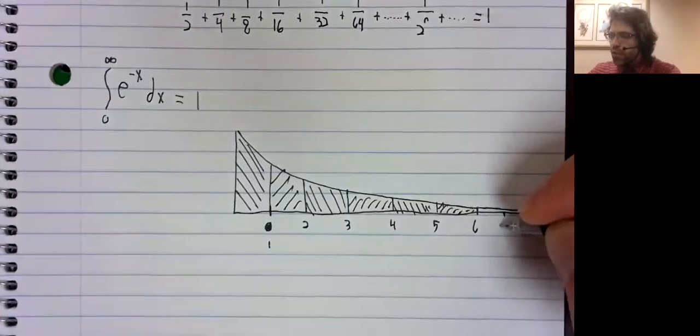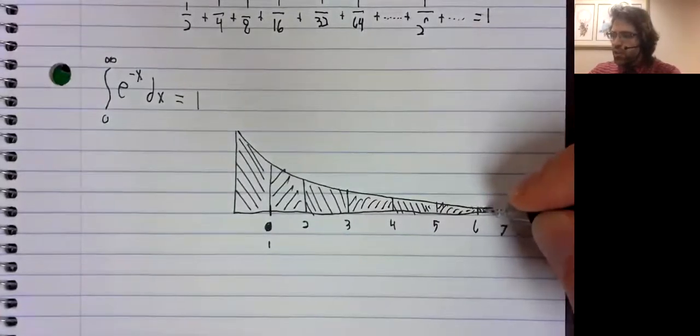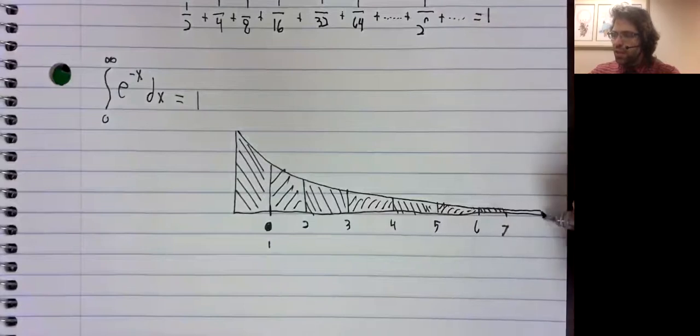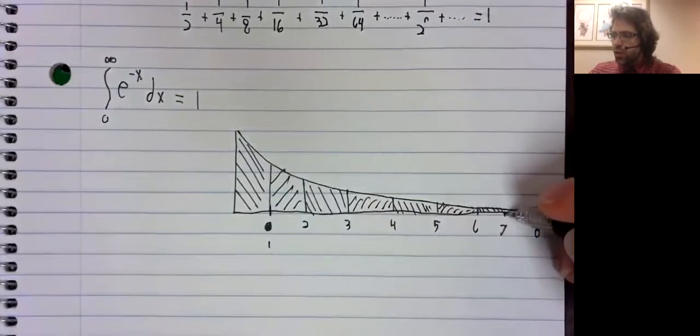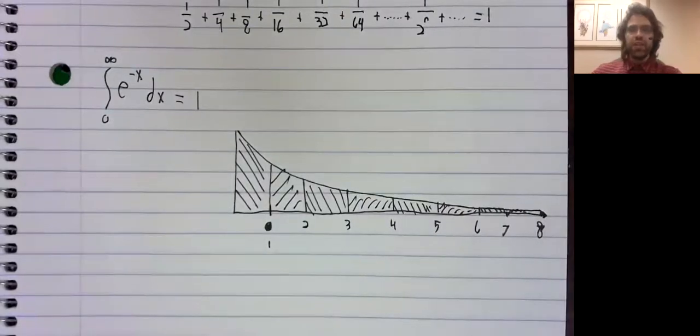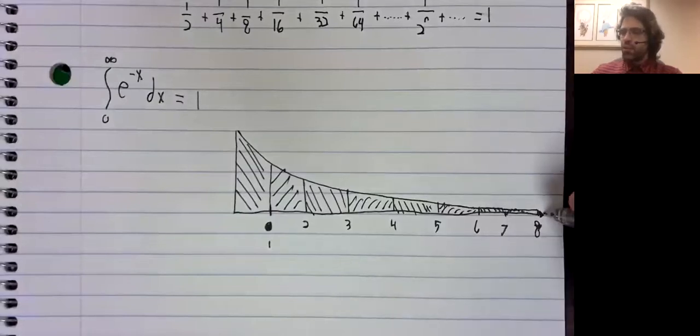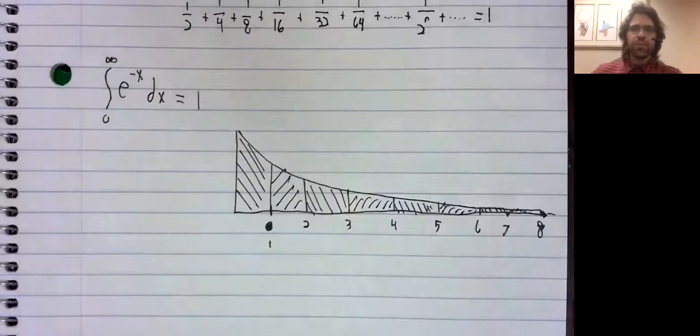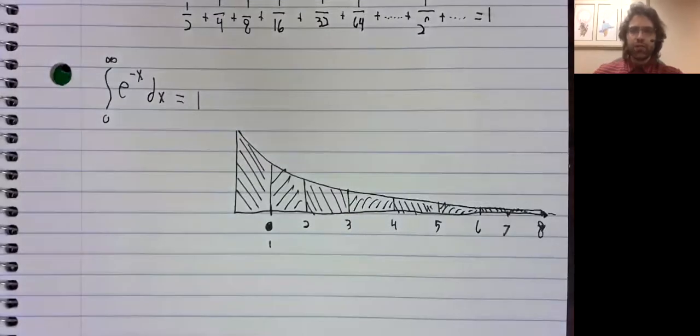Well, there are infinitely many intervals like this. So what I'm saying is that if you take an infinite number of areas and add them together, you should get a finite area.